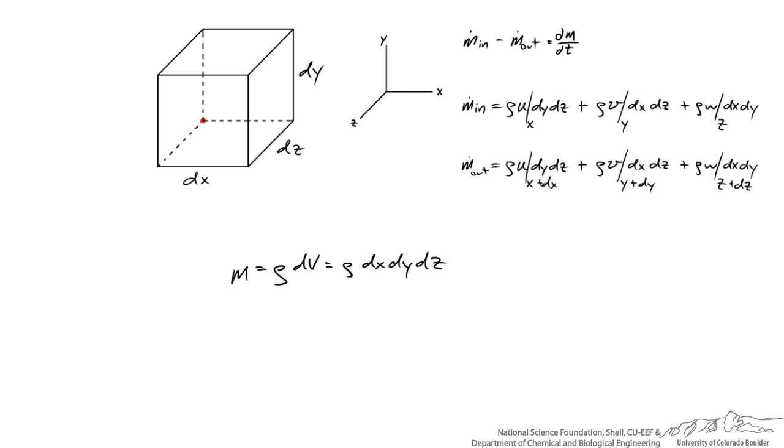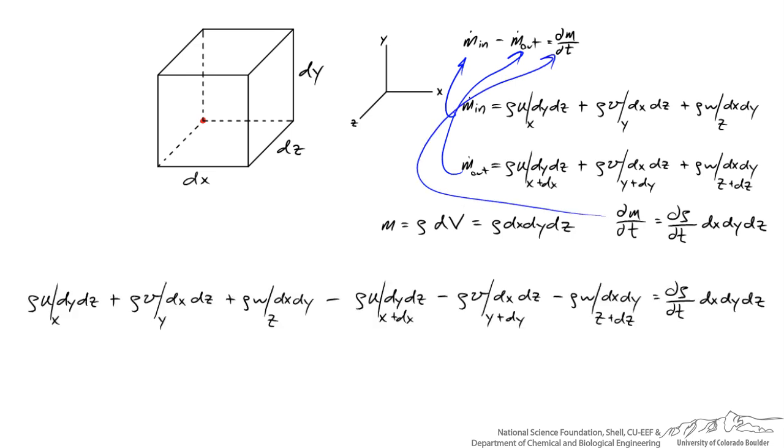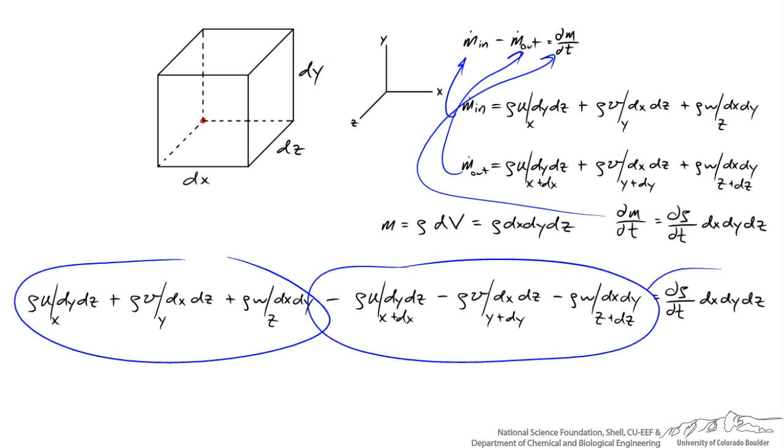And if I take the derivative of the mass with respect to time, dm dt is equal to d rho dt times dx dy dz. So now if I get those out of the way what I'm going to do is I'll make the substitution for m dot in, m dot out, and dm dt. So here's my mass entering minus my mass leaving is equal to the rate at which mass is accumulating within the control volume.